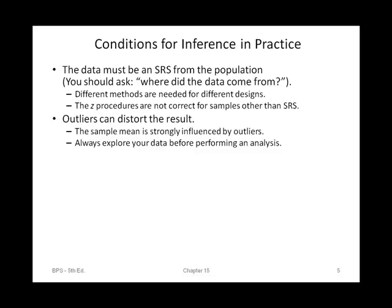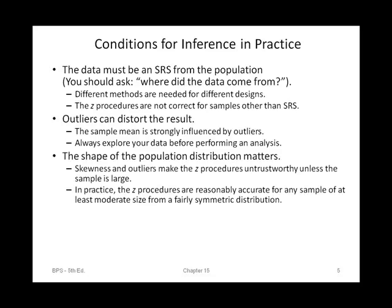Outliers can distort the results. The sample mean is strongly influenced by outliers — when you have outliers far to the right, they pull your mean greater. So you always have to explore your data before performing an analysis. The shape of the population is very important. Skewness and outliers make the Z procedures untrustworthy unless the sample is large. In practice, the Z procedures are reasonably accurate for any sample of at least a moderate size from a fairly symmetric distribution.